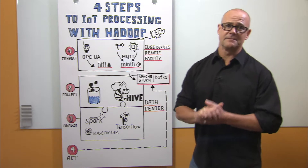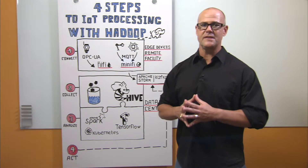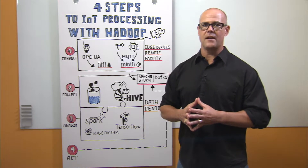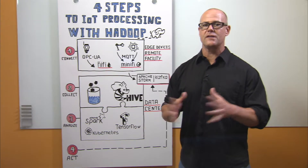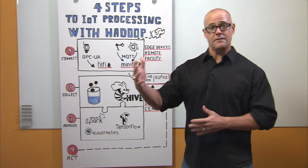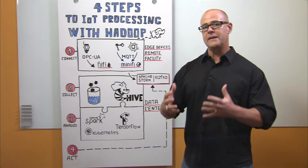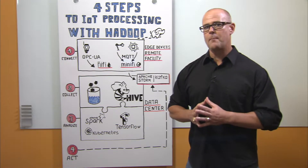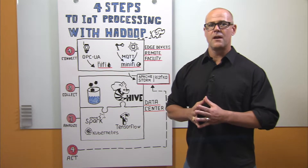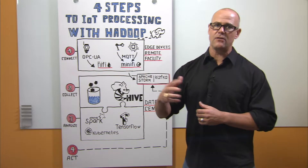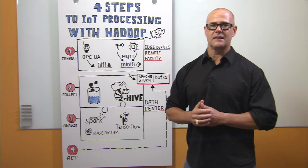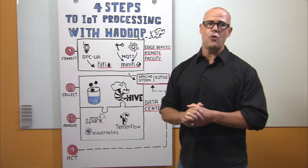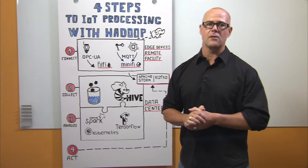Step number one: connect. You have to be able to connect to your devices that produce the data in order to start ingesting it. Sometimes these devices are referred to as edge devices or maybe even just the edge. This is meant to illustrate that it's far away from where the data will ultimately be collected, either in the cloud or in the data center. Apache NiFi is a drag and drop based tool for building workflows that allow you to connect to those edge devices and channel that data to your data lake. It provides many different processors for connecting to devices including MQTT and OPC UA, both popular IoT protocols.